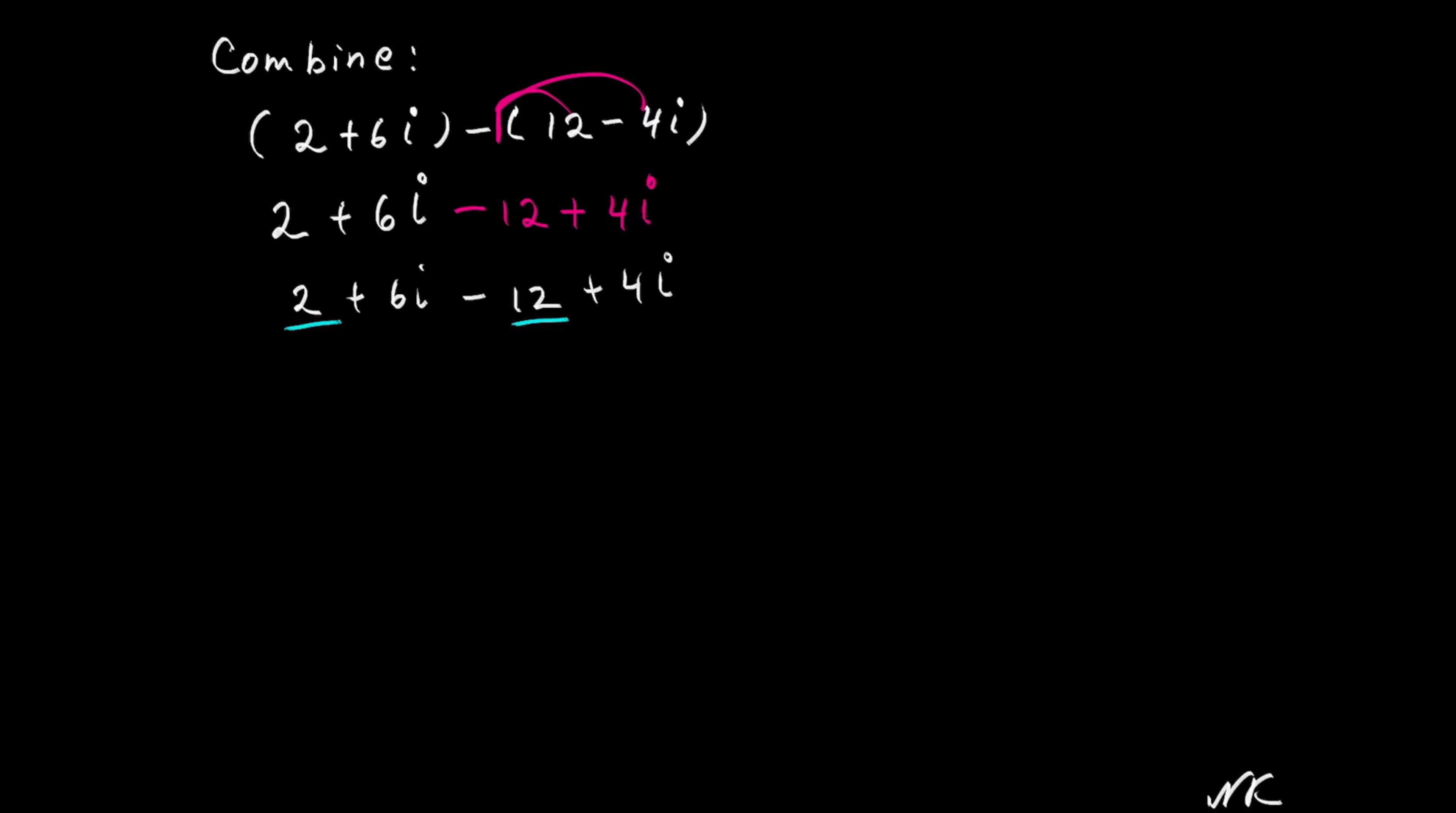We have 2 real numbers of 2 minus 12, plus we have 2 imaginary numbers. We have 6i in the first term plus 4i in the second term.